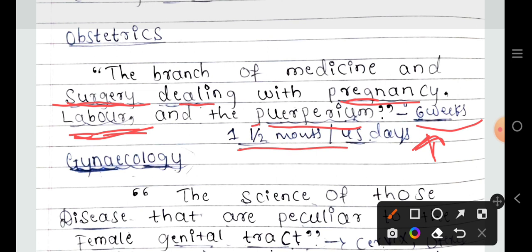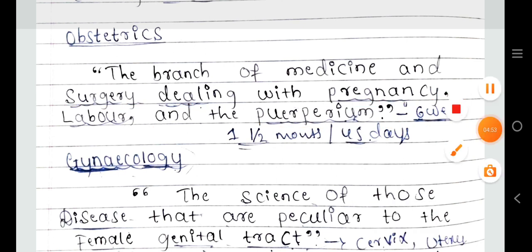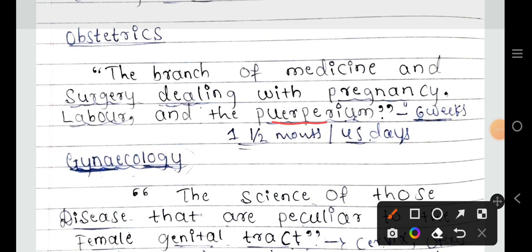Within six weeks, or one and a half months (45 days), the anatomical and physiological changes that occurred during pregnancy will reverse back to the non-pregnant normal state. The puerperium period (PPRM) is when all reproductive organs return to their normal non-pregnant stage within six weeks or 45 days.